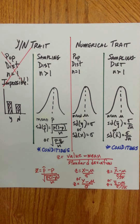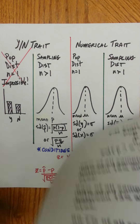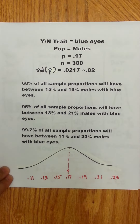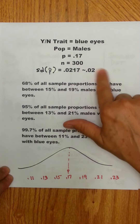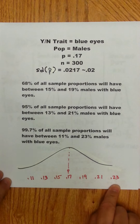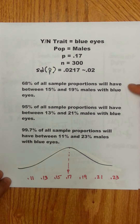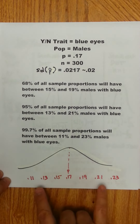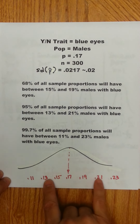Let me go into the interpretation. For the yes-no trait, suppose we're talking about blue eyes, and we're looking at the population of males. Let's say we know 17% of all males have blue eyes, and we start taking samples of size 300. If you calculate the standard deviation — square root of p times 1 minus p over n — you get approximately 0.02. So 68% of all sample proportions will have between 15 and 19% males with blue eyes in those samples, and so on with the empirical rule: 95%, 99.7%.